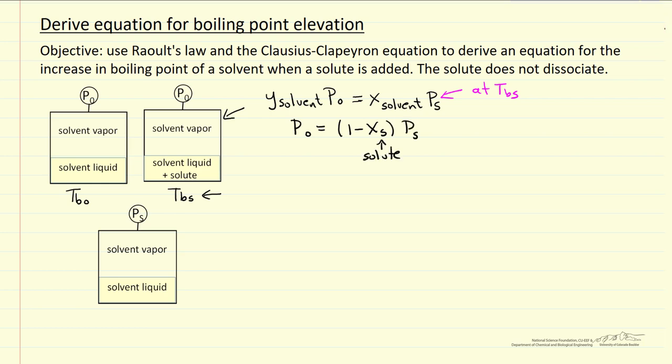So if we want to compare these two systems of the pure solvent, the saturation pressure is related to the heat of vaporization for the solvent over R, and now we're at temperature Tb0, that's where we have P0, and plus B, where this is a constant, and for a different solvent it's going to be a different constant.